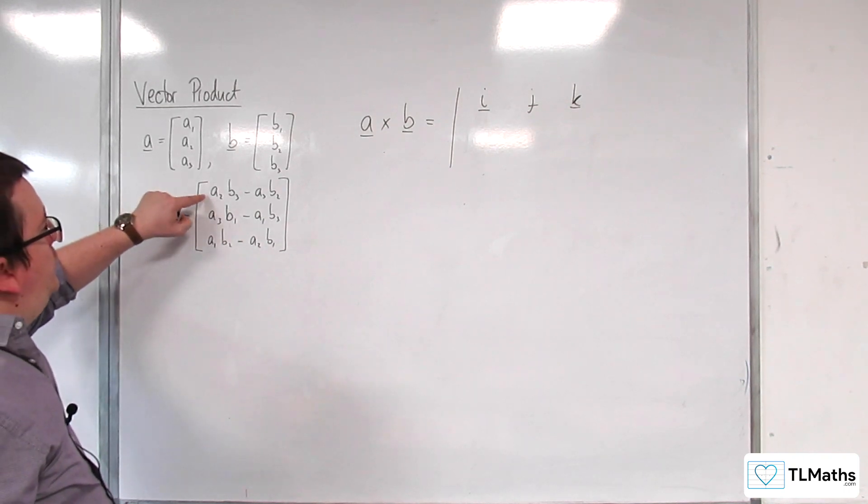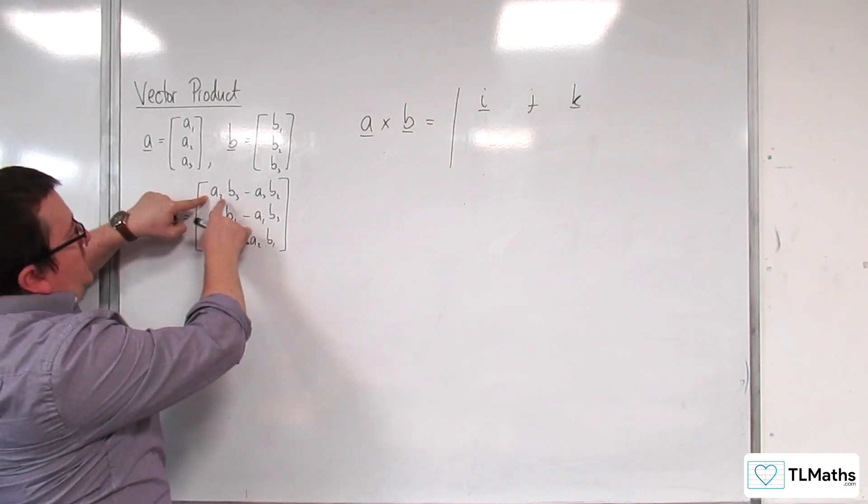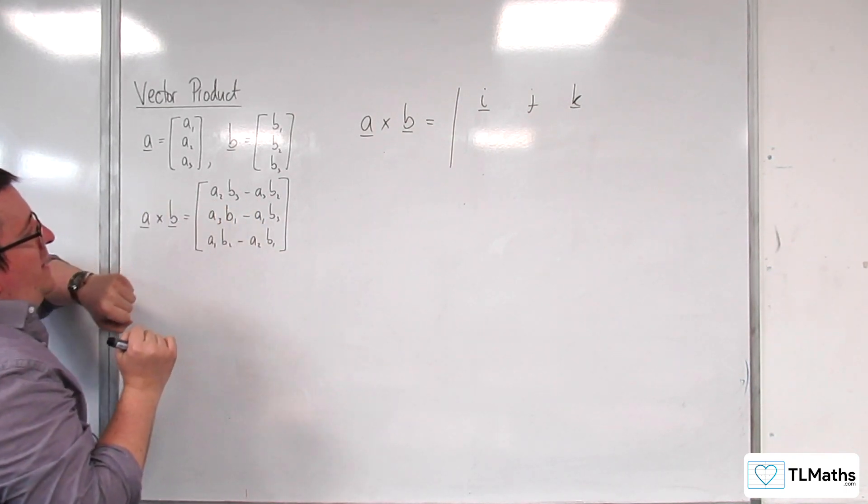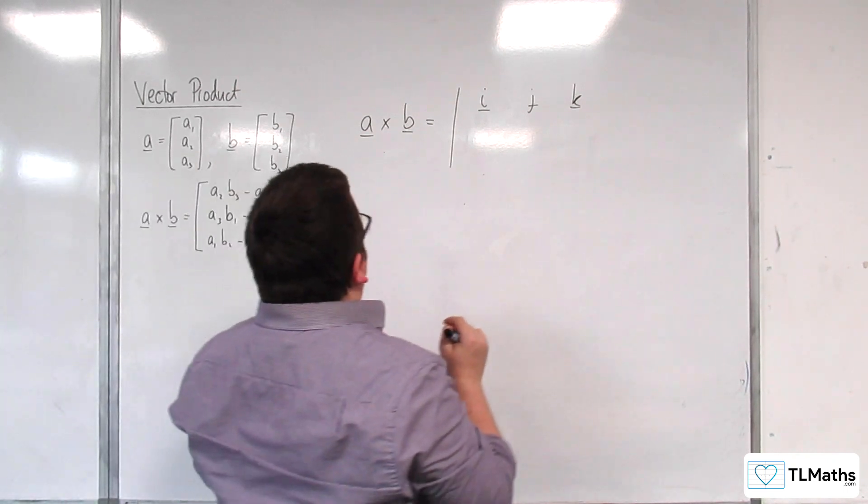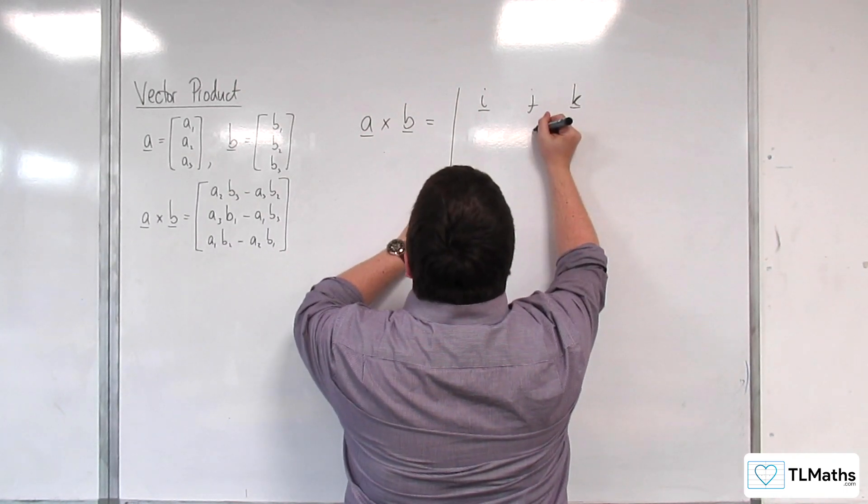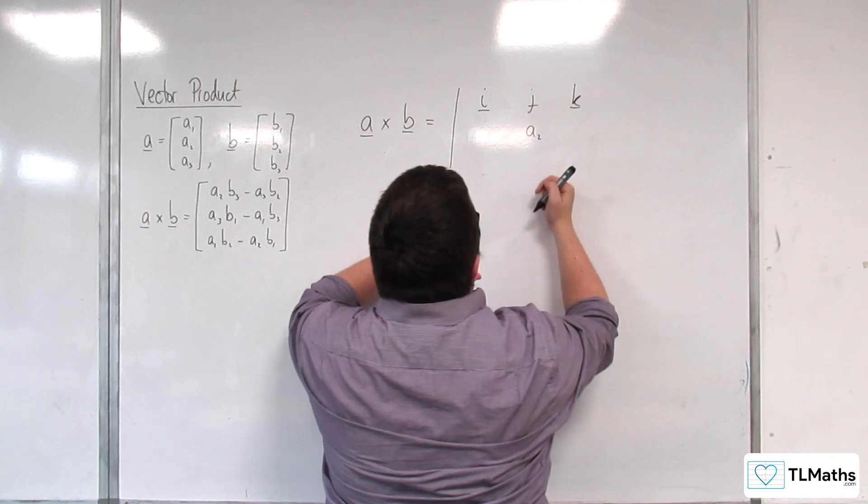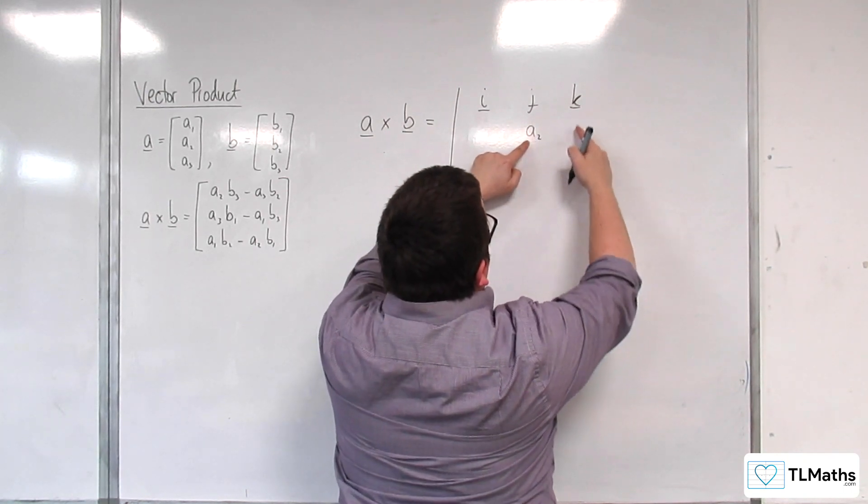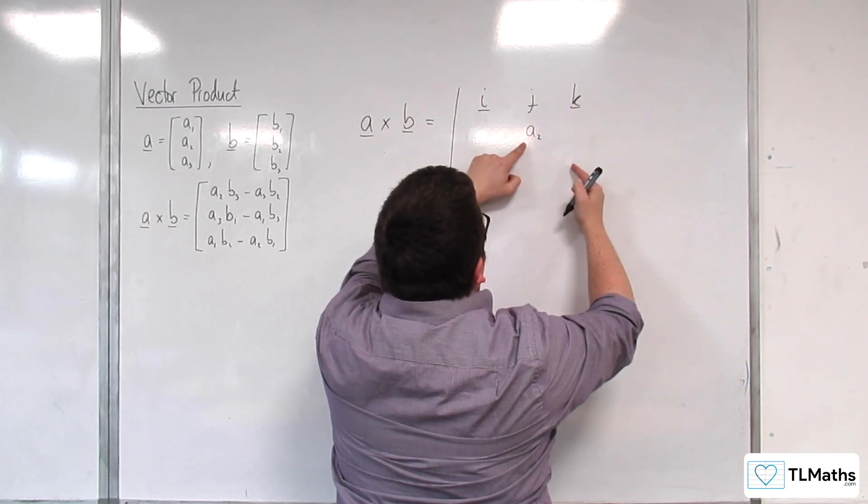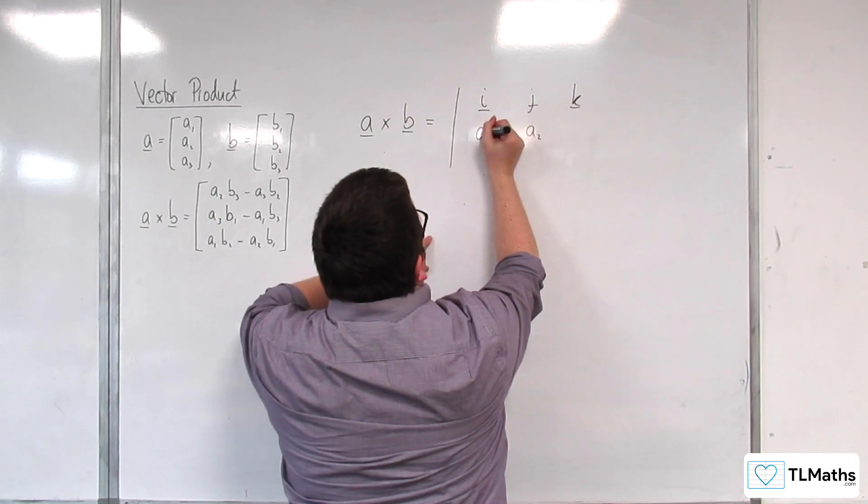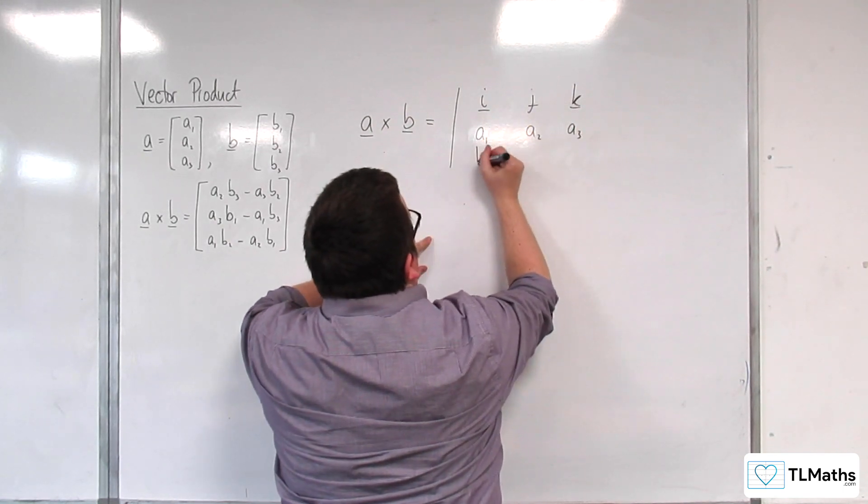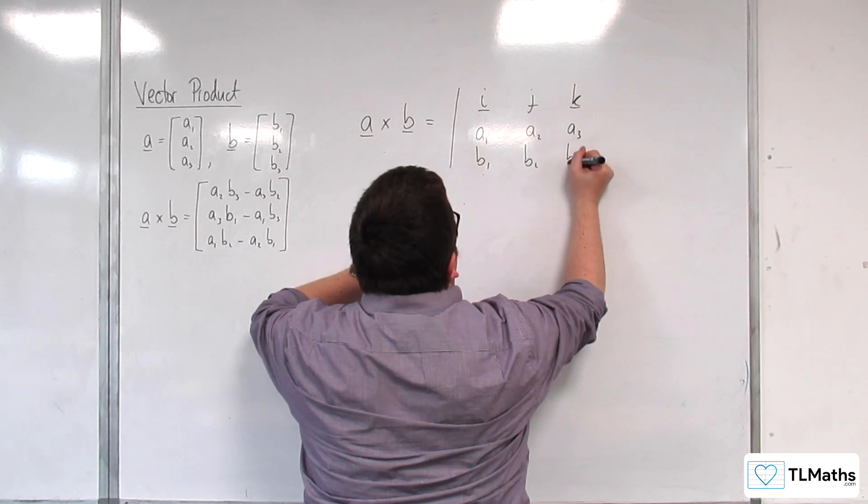And each of these, if you can see, we've got A2, B3, take away A3, B2. So, if we put those in, it would be like having the determinant of a smaller matrix inside. So, if we have A1, A2, A3, and B1, B2, B3,